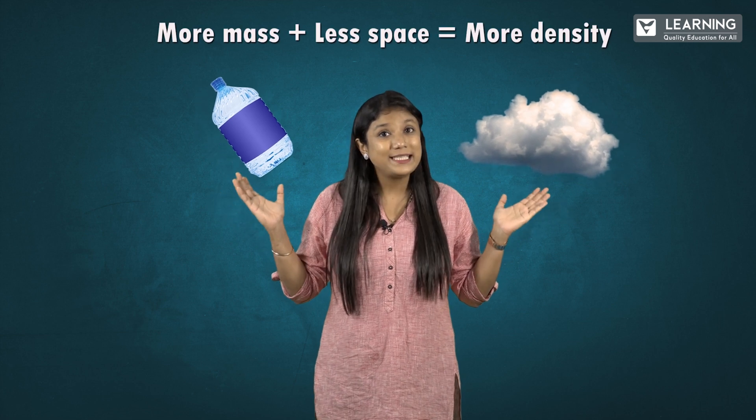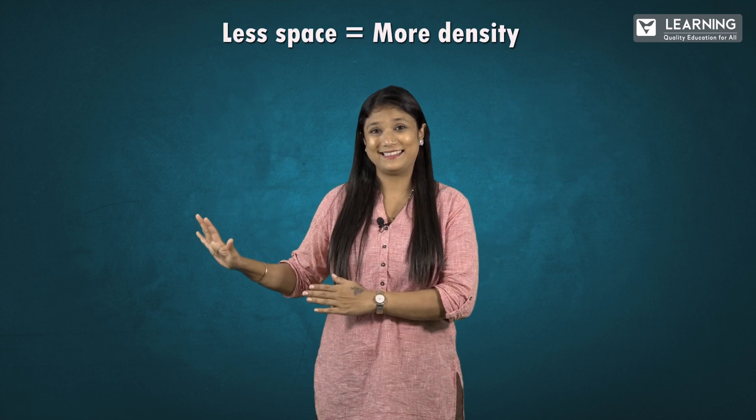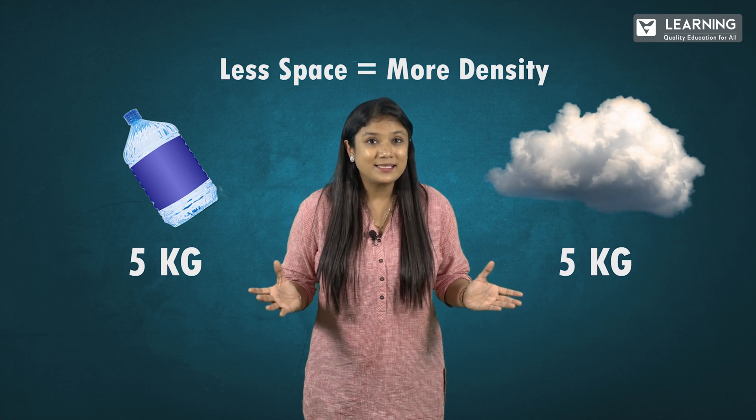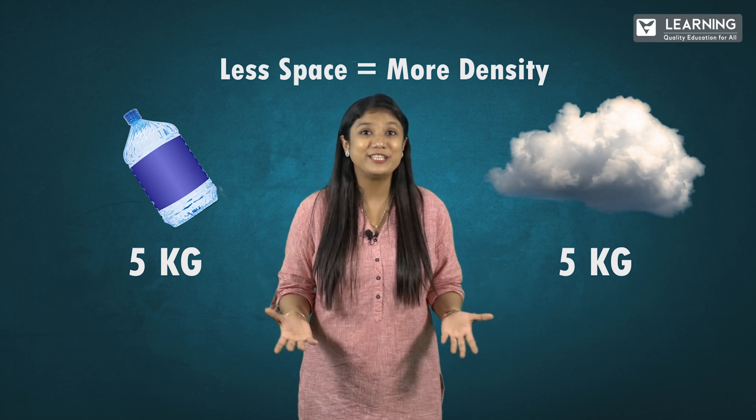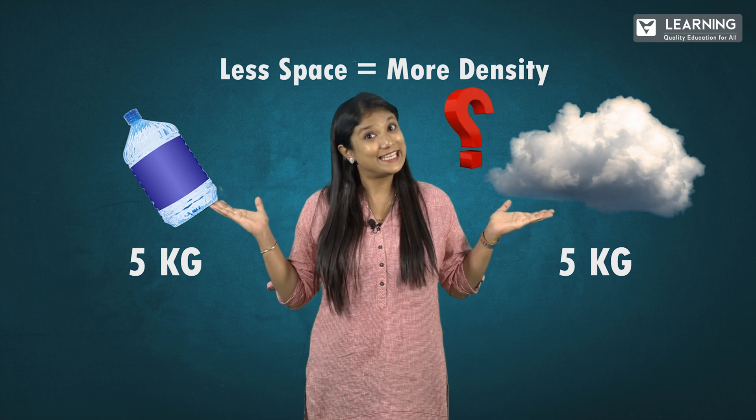Now let's look at our water bottle and cloud. Both of them are equally heavy, so we take out mass from the comparison. That means the one which occupies less space has more density. Which one do you think occupies less space? Obviously it's the water bottle. So among these two, which has the greater density? It's the water bottle — because it occupies lesser space. Fun, isn't it?